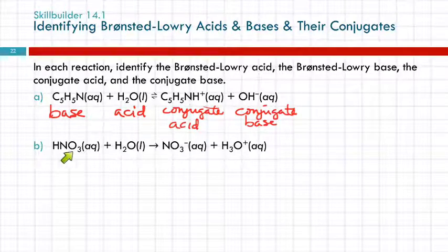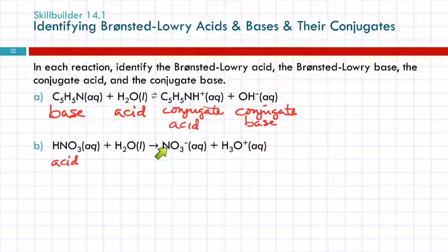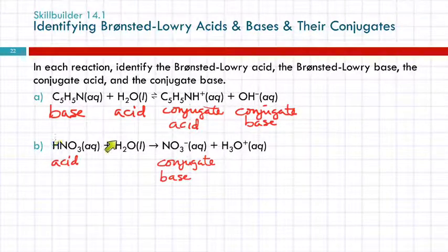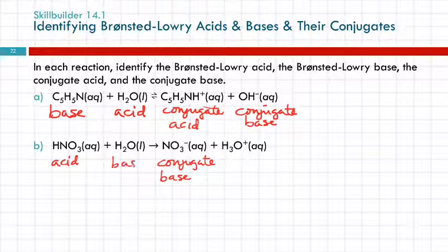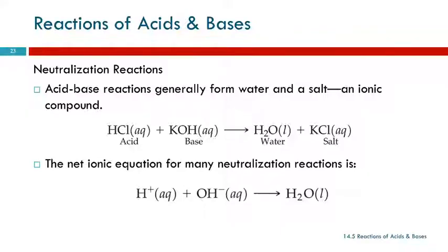Looking at example B: HNO₃ and H₂O react to form NO₃⁻ and H₃O⁺. HNO₃ is the acid — it becomes NO₃⁻ by donating a hydrogen ion, so the acid becomes the conjugate base. Water must be the base, and we see it accepted the proton to form H₃O⁺, so water is the base and H₃O⁺ is the conjugate acid.